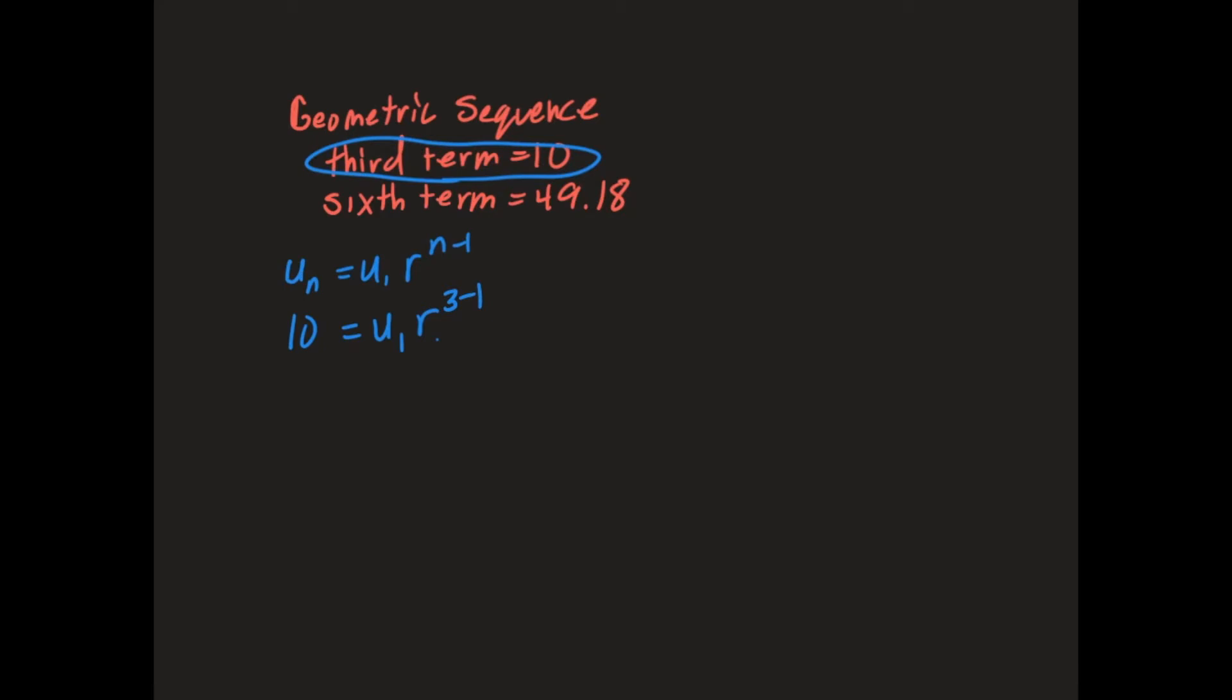Now I can do the same thing here with the sixth term. So the sixth term is 49.18, which is equal to u1 times R, which I still don't know what that is, but now it's n minus 1, and this n is the sixth term, so it'll be 6 minus 1.